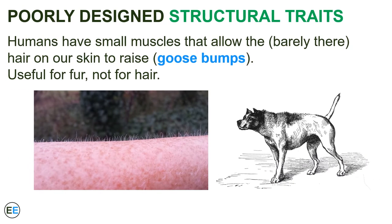Humans also have small muscles in our skin that can make the hair raise and cause goosebumps. This feature is fairly useful for organisms that have thick fur, like a dog, where raising the fur makes it appear larger and more intimidating. What makes almost no sense is goosebumps for an organism that has almost no hair. Retaining these muscles, because we have inherited them from ancestors who did have fur, does make sense.